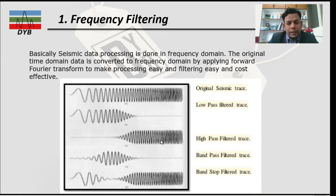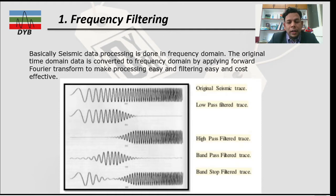There is another filter called the band pass filter. With this filter you define a frequency limitation — for example 10 to 20 Hz or 20 to 30 Hz — for a certain band of frequency, which is normally used for spectral decomposition. Then we have the band stop filter. If you want to remove a certain frequency — such as noise from a power induction line — you can use the band stop filter. All these filters will be discussed in detail.